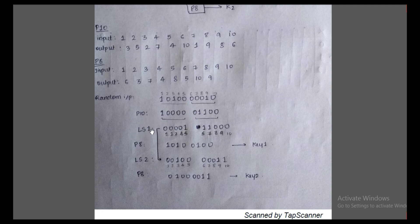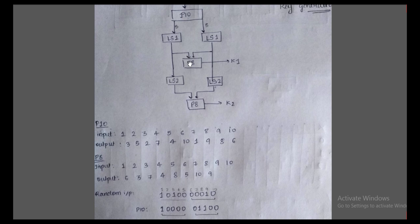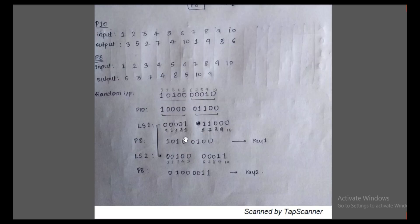Now we convert the P10 output into LS1. LS1 means left shift by one position, so we shift the first bit to the end of each half. The output of LS1 is: zero, zero, zero, zero, zero, one for the first five bits, and one, one, zero, zero, zero, zero for the second five bits.